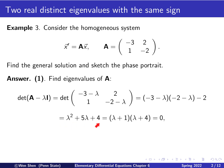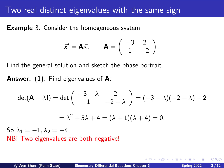We wish to find zeros of this polynomial, and we can factorize it because we can break 4 into 1 times 4, and 1 plus 4 is exactly 5. Therefore, we can factorize it and solve it when it equals 0. In this factorized form, one eigenvalue is lambda 1 equals negative 1, and the second is lambda 2 equals negative 4.